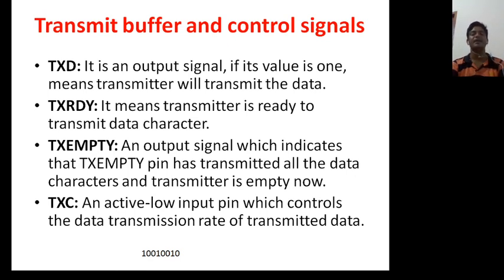TxEMPTY, an output signal, it indicates whether the transmitter has transmitted all the data and transmitter is empty now. Generally, it indicates whether transmitter is empty or not. If not empty, it means it is transmitting data. TxC, an active low input signal which controls the data transmission rate of transmitted data, means by which rate you are sending the data.